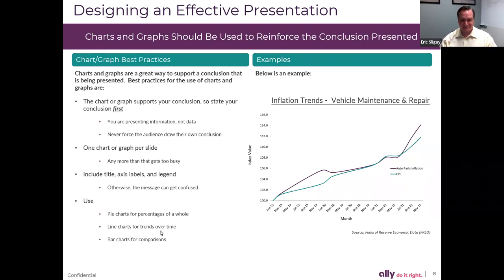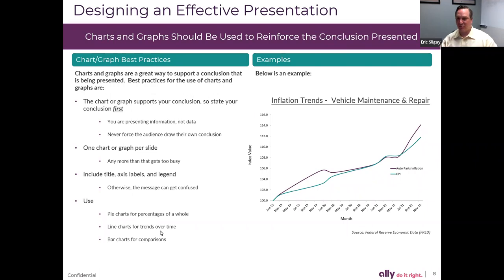Chart and graph best practices: the chart or graph supports your conclusion, so state the conclusion first. You're presenting information, not data — never force the audience to draw their own conclusion. One chart or graph per slide. Include title, axis labels, and a legend, otherwise the message can get confused. Recommendations for chart types: pie charts for percentage of the whole, line charts for trends over time, bar charts for comparison. For example, here you can see a graph of inflation trends in vehicle maintenance and repair, showing index value on the vertical axis, time periods across the horizontal axis, auto parts inflation in one line and consumer price index in purple.